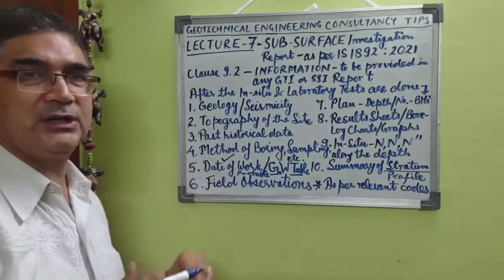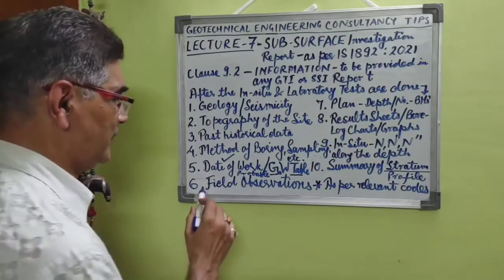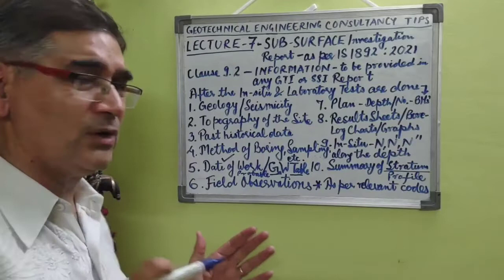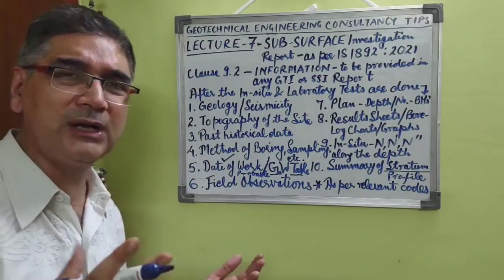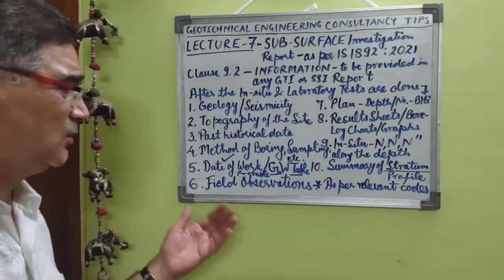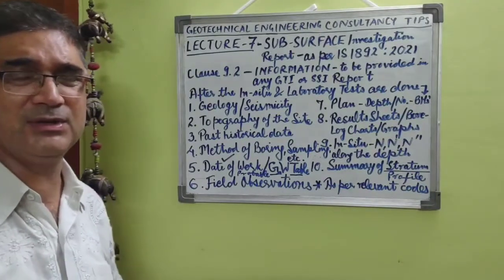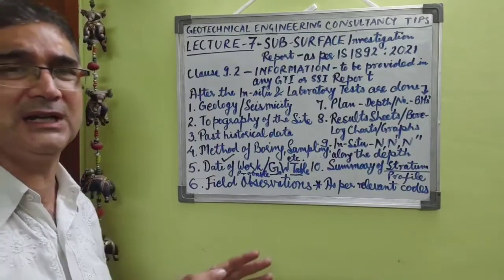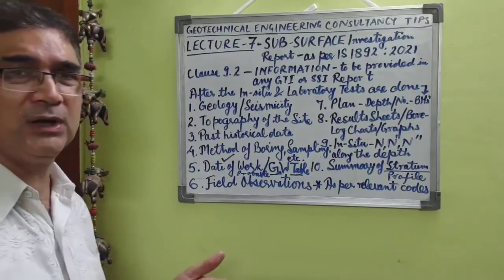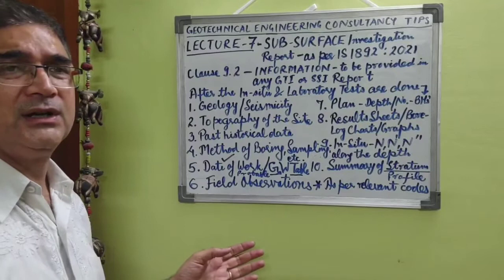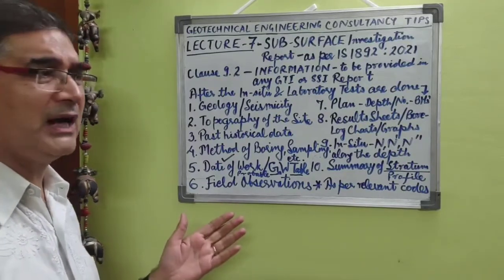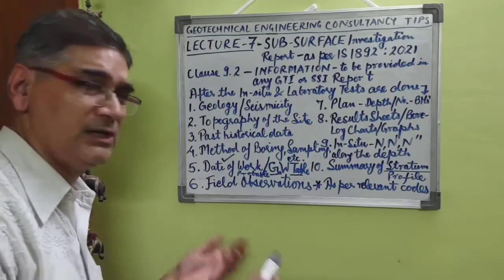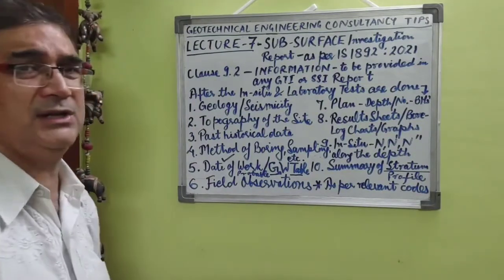Point six is field observations. If you encounter any unforeseen conditions — any loose strata, filled-up soil strata, organic matter content, or anything untoward — or if you get a surprisingly low standard penetration test value or anything unexpected, these field observations must be recorded and included in the report.